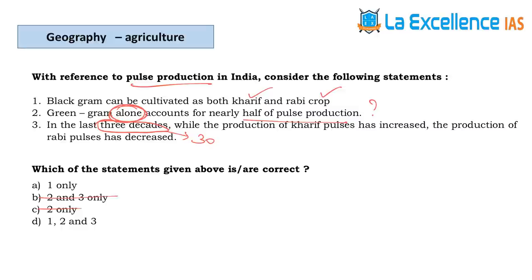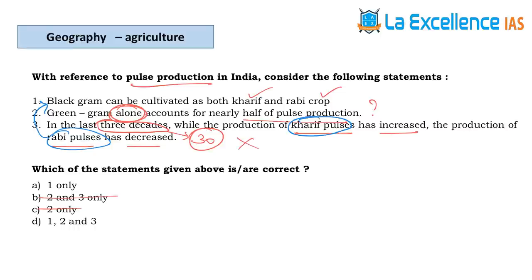Statement 3 — in the last three decades, production of Kharif pulses has increased while production of Rabi pulses has decreased. Interestingly, statement 3 itself confirms that Kharif and Rabi pulses both exist, answering statement 1. Also, over 30 years you cannot expect consistent increase or decrease in one category — such long-term consistency is unlikely. So eliminate statement 3; the answer is A.